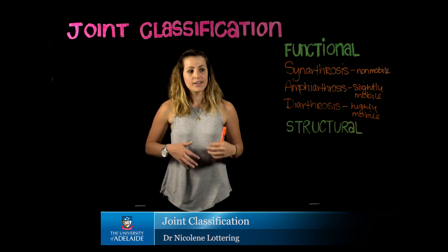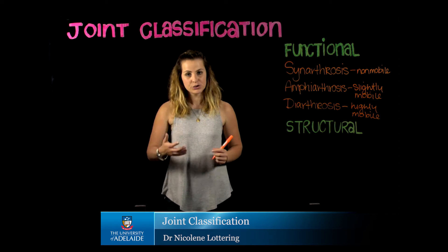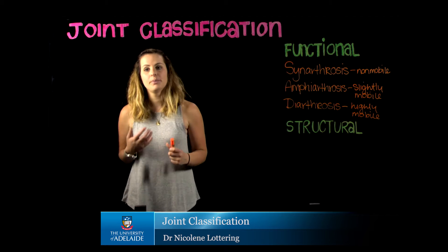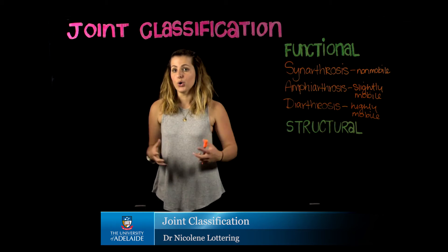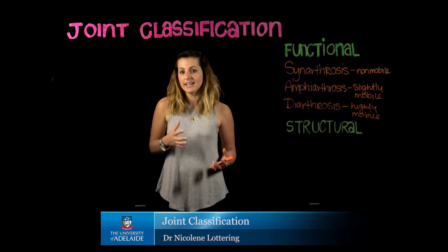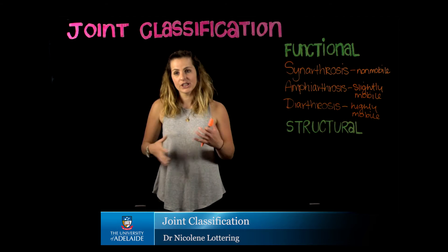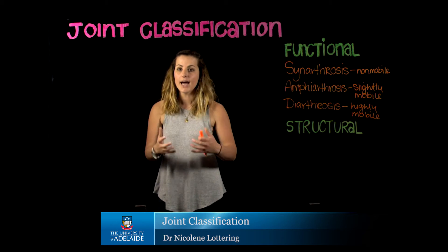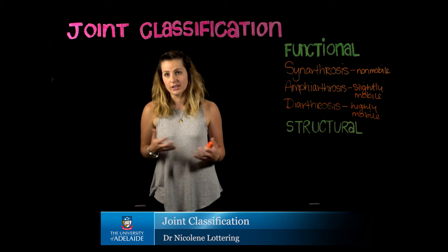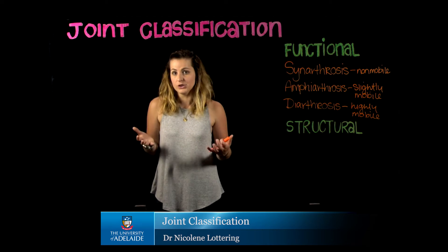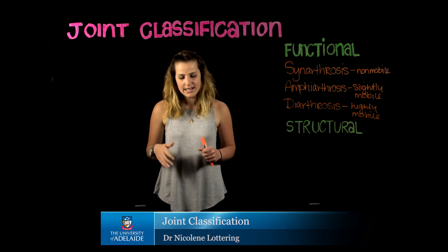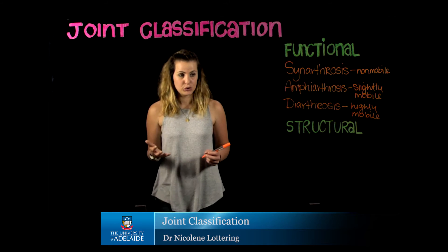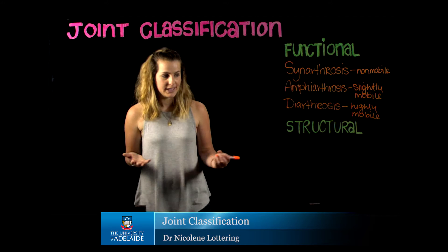When we're talking about the structural classification associated with a joint, this is going to be the material composition that is actually linking bones together — so this is going to be the type of connecting material associated with the joint. Again, there are going to be three different types of joints in terms of their structural classification.